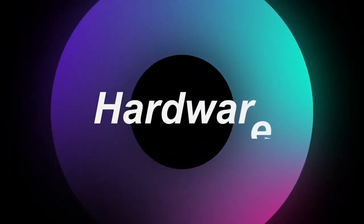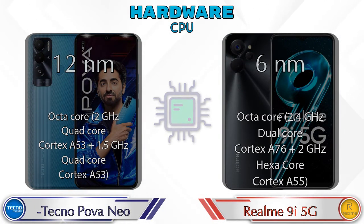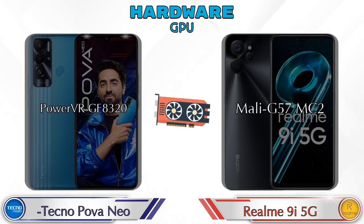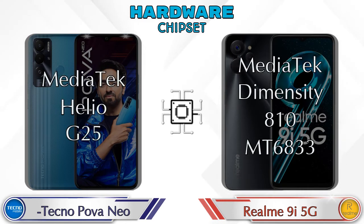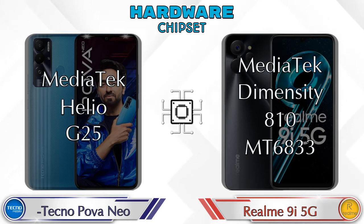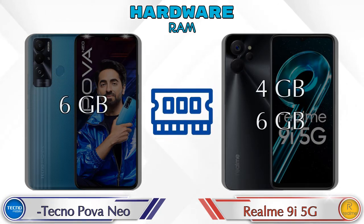First we talk about the most important part — hardware. Looking at the CPU details: for GPU, the Pova Neo has PowerVR GE8320 and the 9i 5G has Mali-G57 MC2. For chipset, the Pova Neo has MediaTek Helio G25 and the 9i 5G has MediaTek Dimensity 810 MT6833.